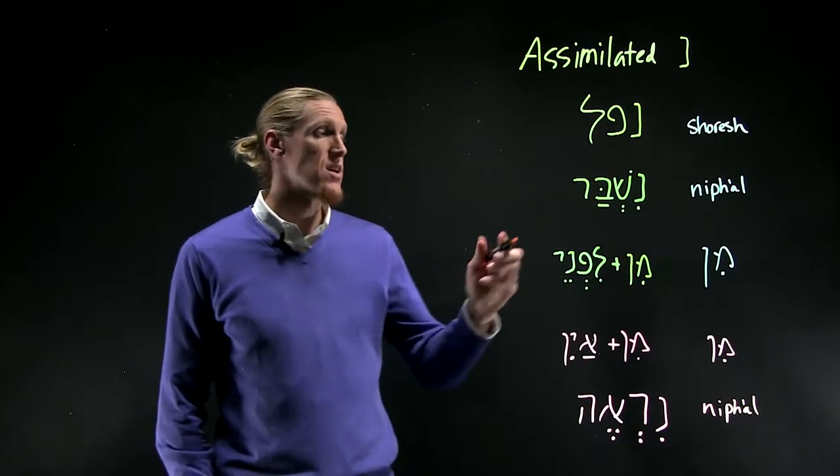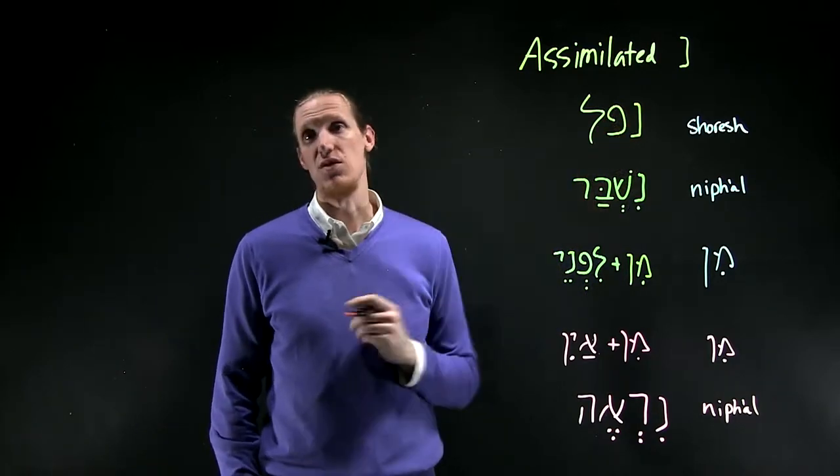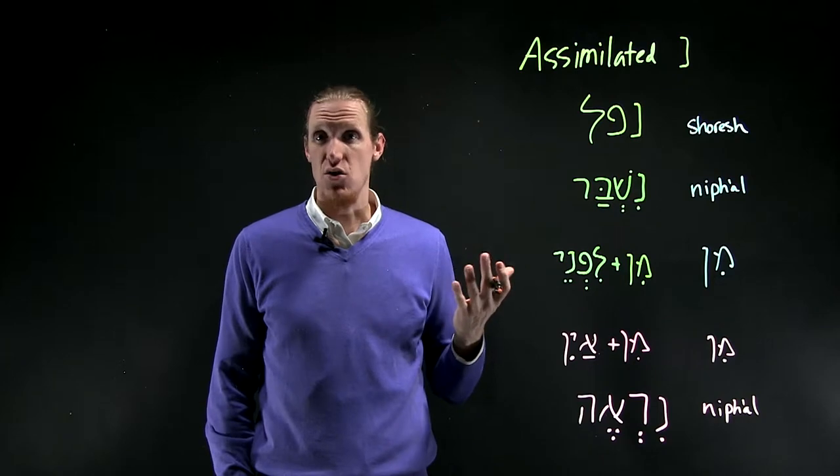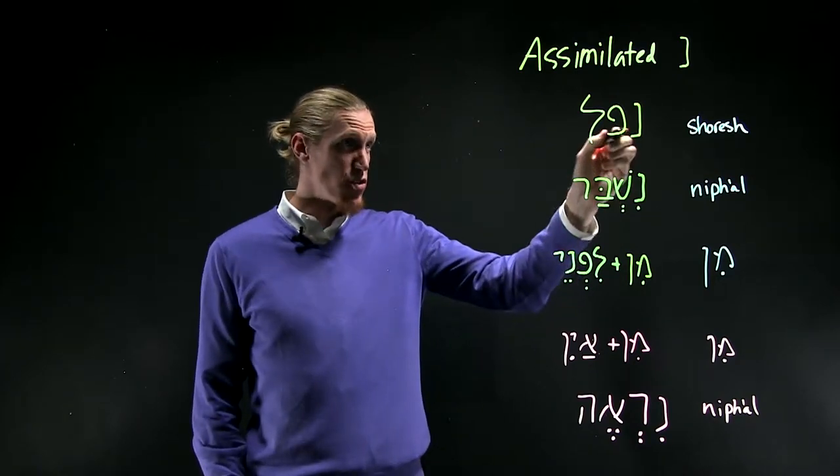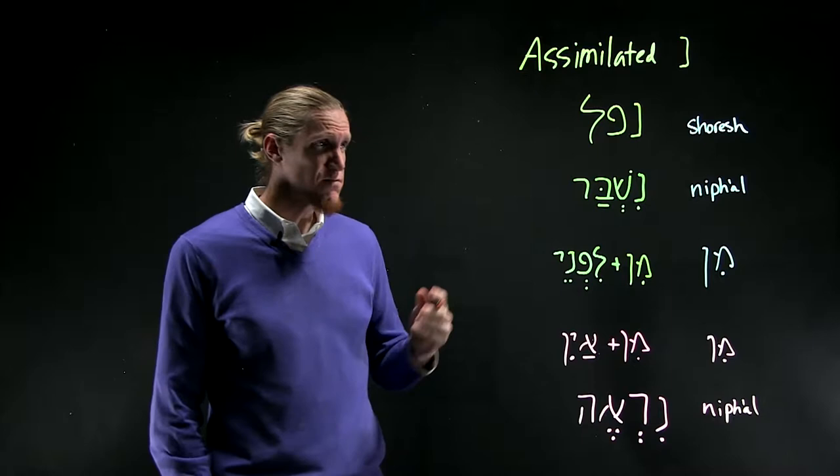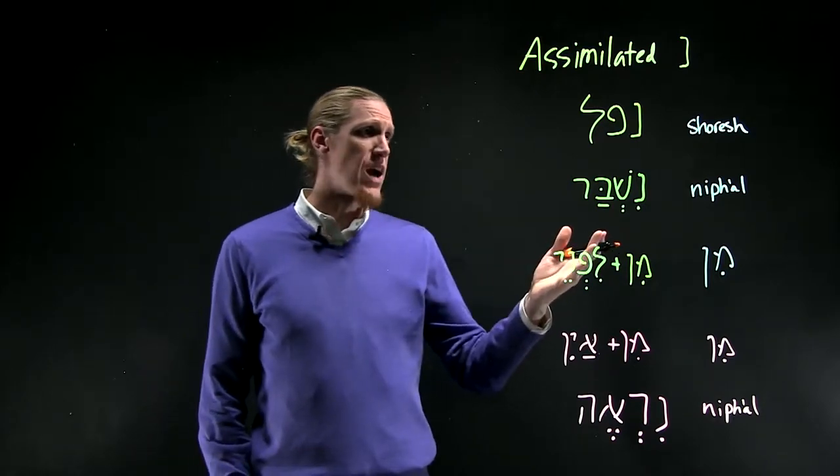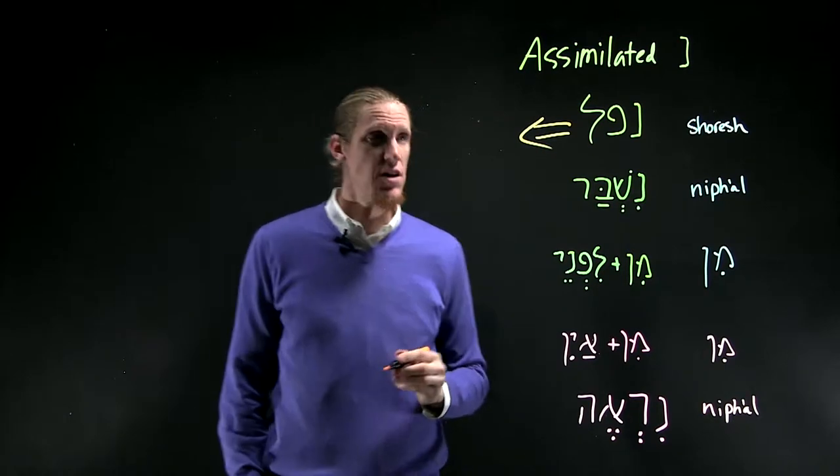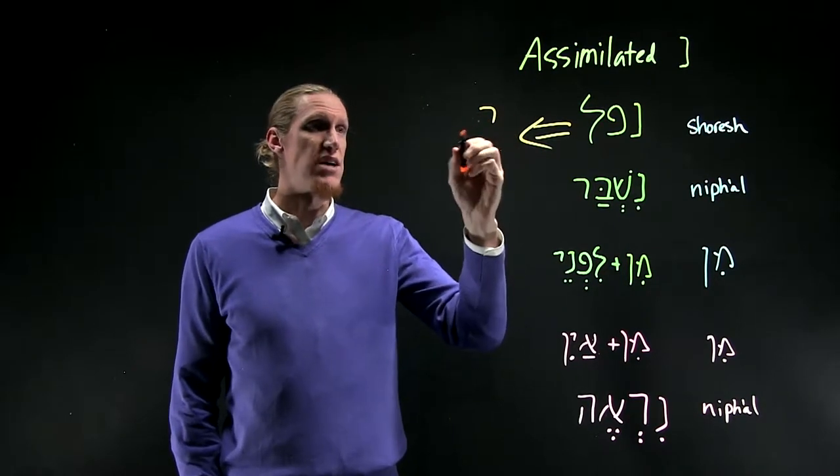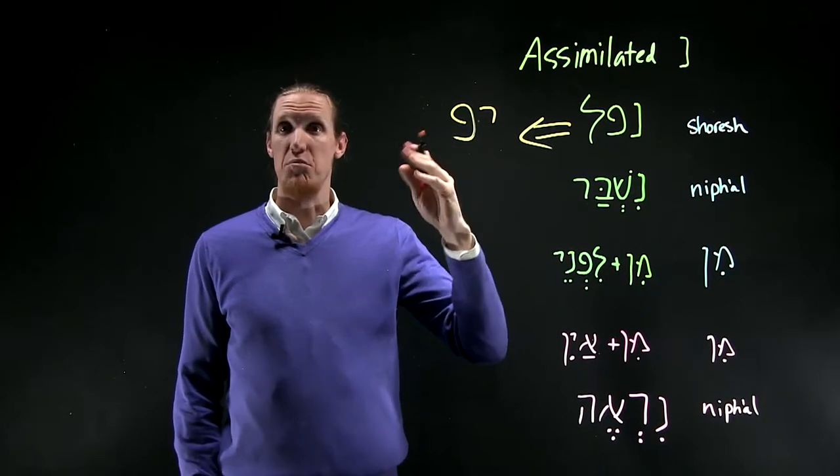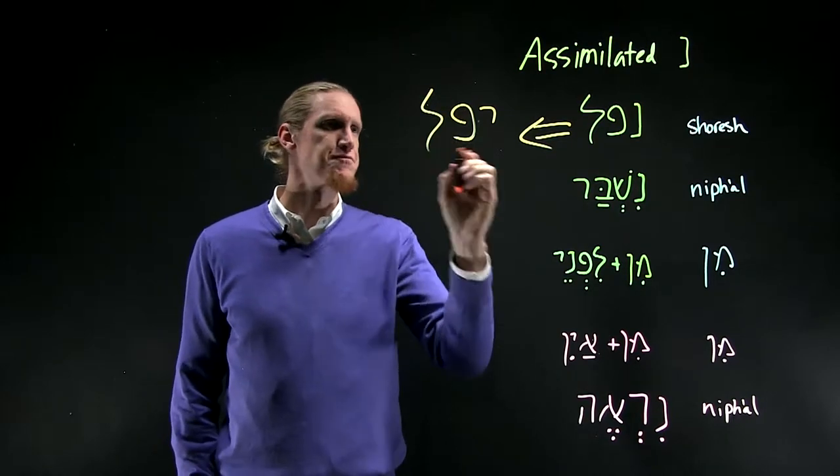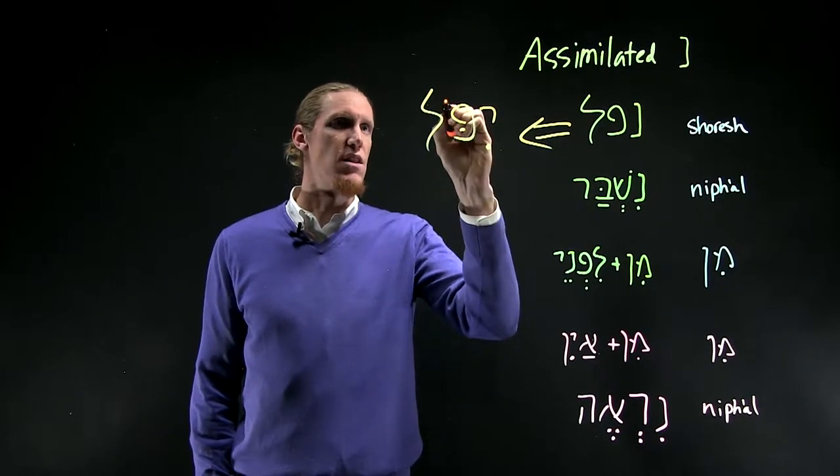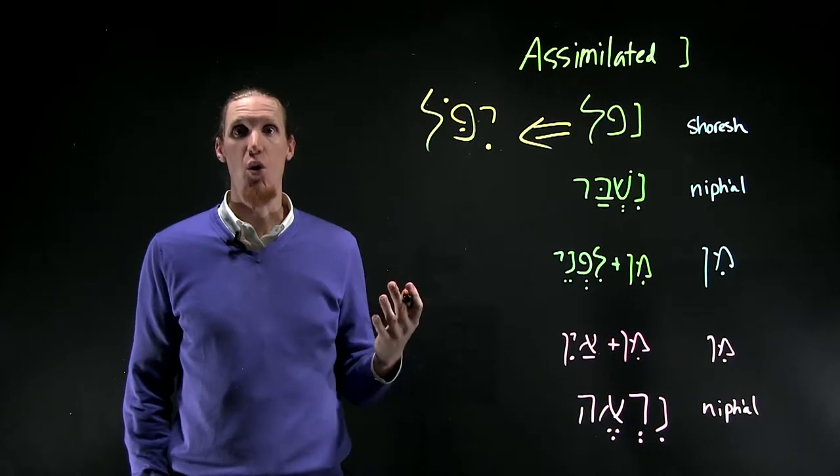The first is when it's the first root letter in a Shurish. Here we have Nun Pe Lamed. Now, if we have Nun Pe Lamed in an imperfect form, let's say third masculine singular pa'al imperfect, that form is yipol.